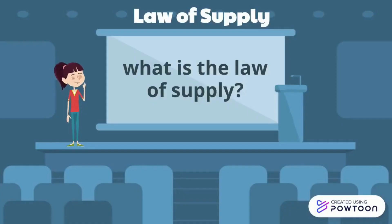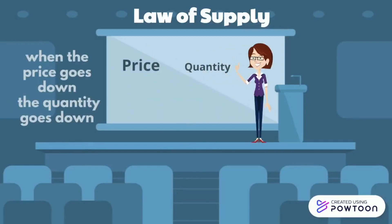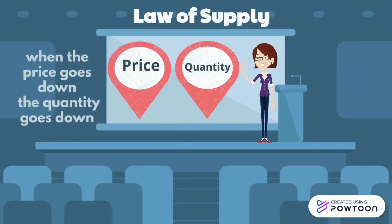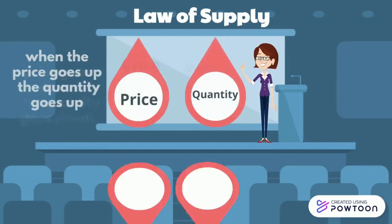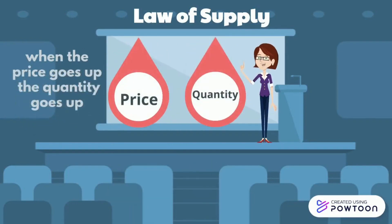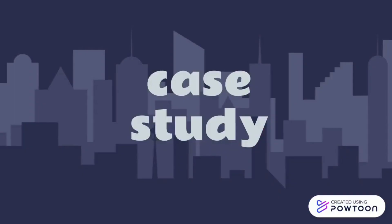What is the law of supply? Law of supply: when the price goes down, the quantity goes down. And when the price goes up, the quantity goes up.